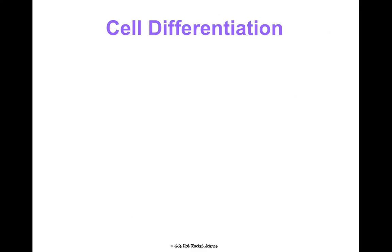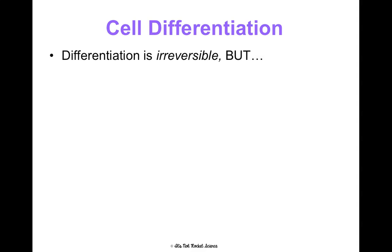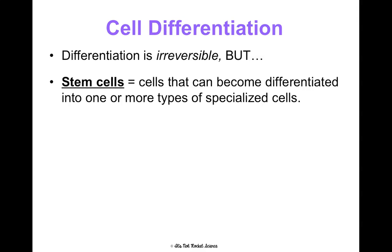Let's talk a little more about differentiation before we talk about the cell copying process. Differentiation is irreversible — once it happens, it happens. But we have something called stem cells. Even though your hair cell, once it's become a hair cell, it's a hair cell forever, and once your brain cell becomes a brain cell, it's a brain cell forever — stem cells are cells that have not been differentiated yet. They can still become differentiated into one or more types of specialized cells; they're undifferentiated cells.